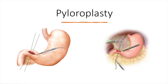A pyloroplasty is a procedure that widens the opening between the antrum and the duodenum to facilitate the passage of gastric contents. The purpose of this procedure is to either render the pylorus incompetent or completely bypass it. This procedure can be done with an open approach, as seen in the picture on the left, or laparoscopically as seen on the right. Pyloroplasties are simple procedures with low surgical morbidity and mortality, and there are three main techniques.